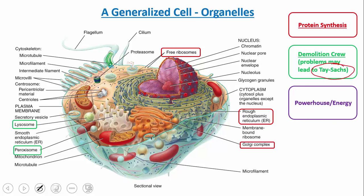The third category is the powerhouse — the energy of the cell. Where does the cell get its energy from? Here we highlight the mitochondrion, which you see at the bottom right. Mitochondrion is singular; mitochondria is plural. The mitochondria are double membrane structures that really help produce energy for the cell. It sort of shows the unity of life and symbiosis.